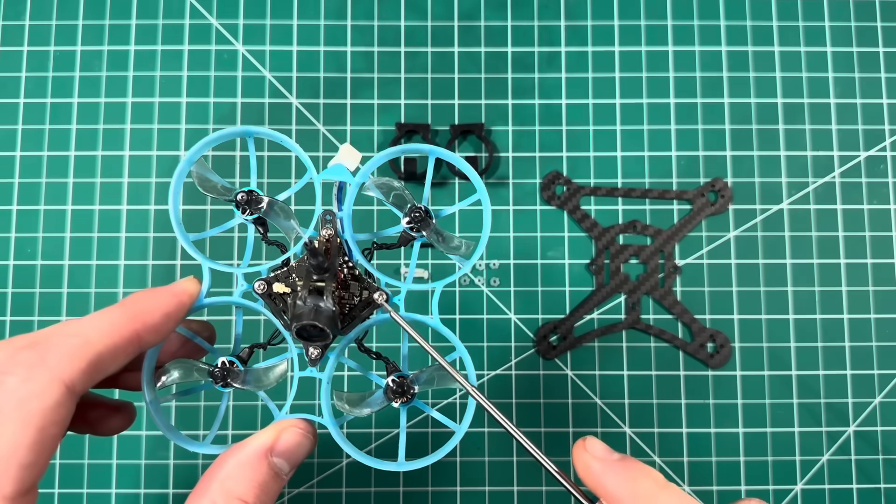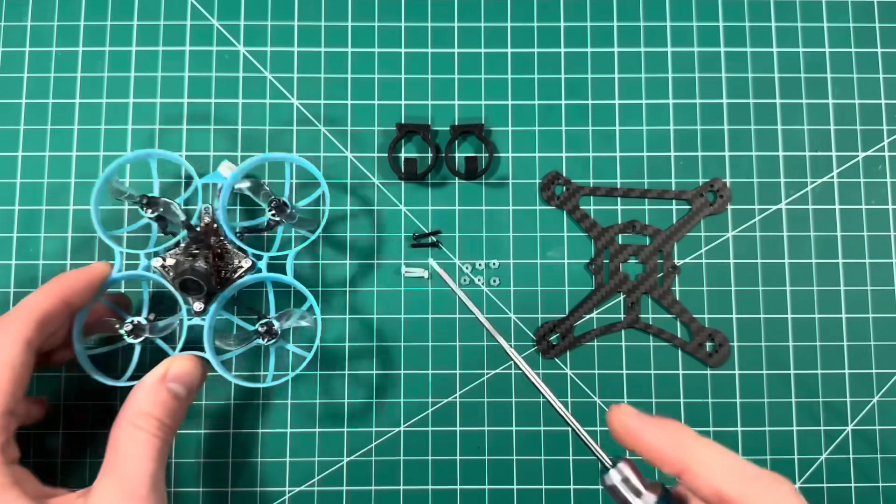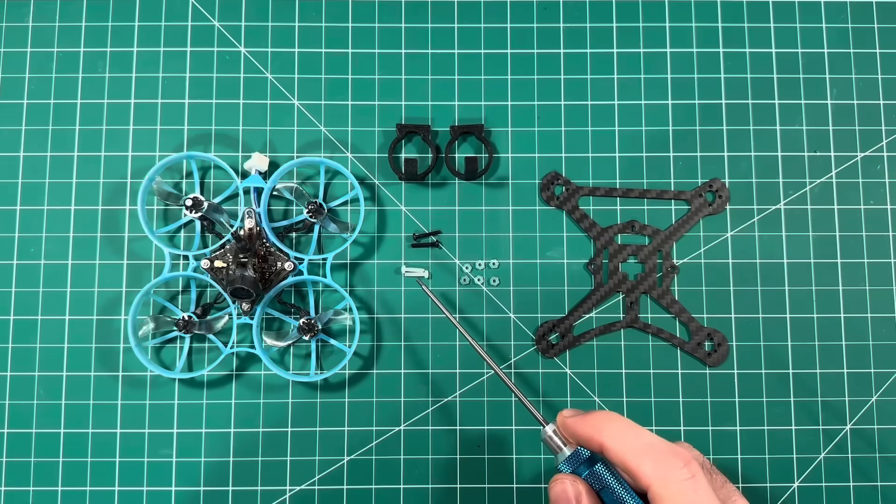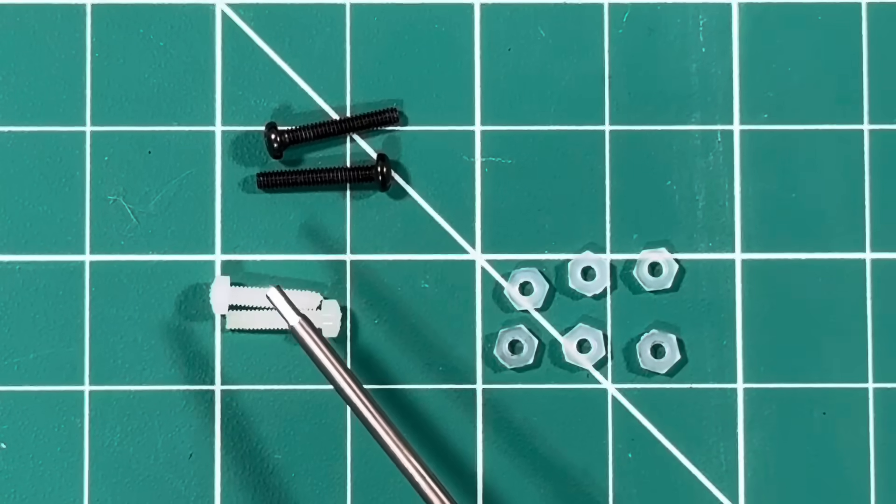Most Tiny Whoops use 1.2 or 1.4 millimeter screws to mount the flight controller into the frame. We're going to be using 2 millimeter. As you can see here, there's not that much.